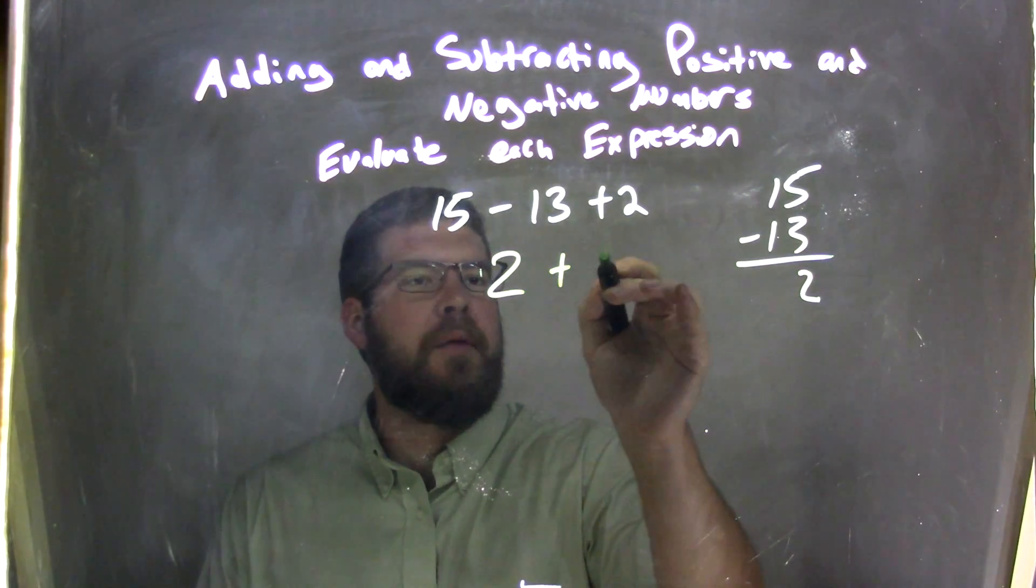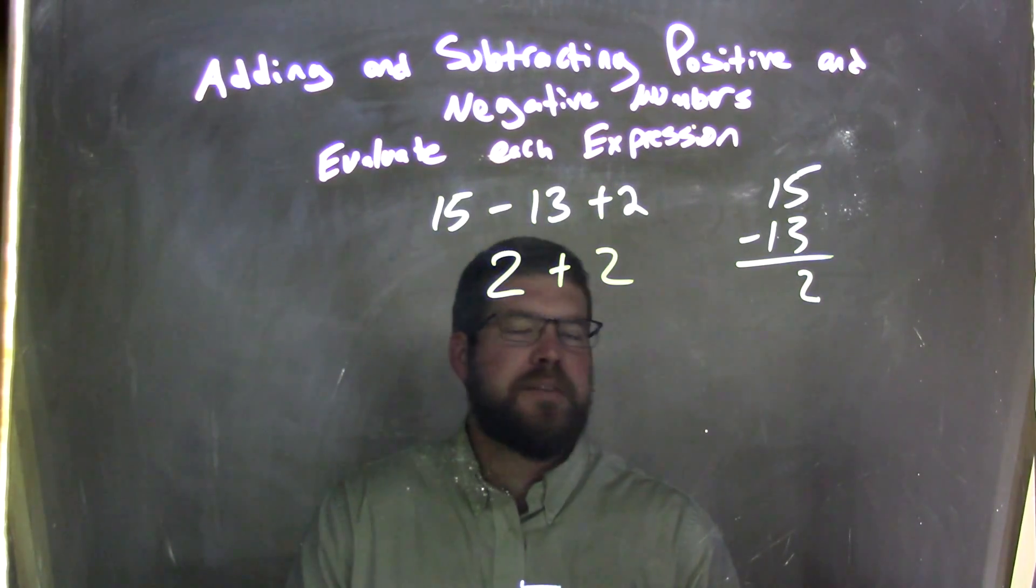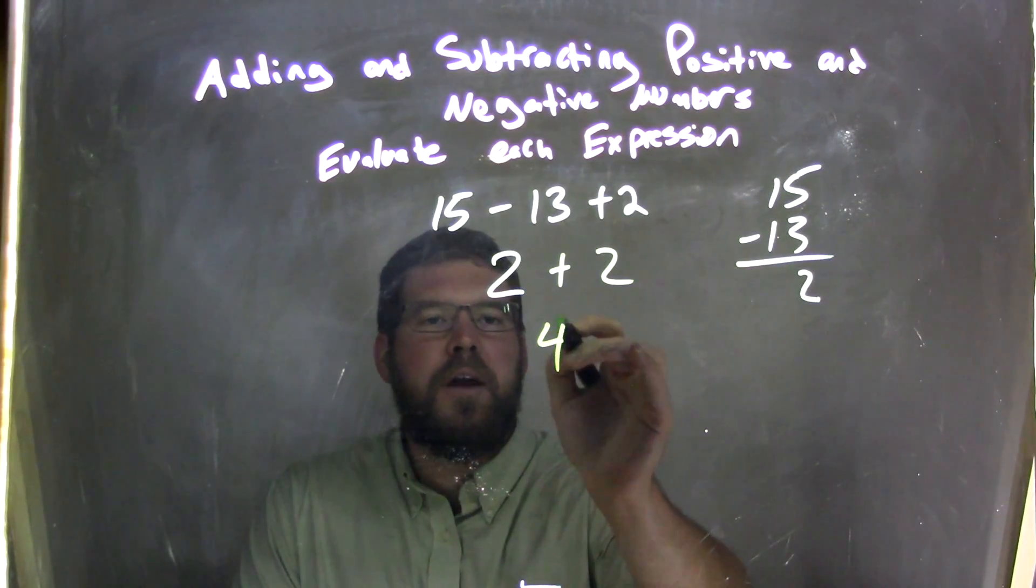So I have positive 2 here, and I'm going to bring down this 2. Sometimes you don't need to convert it to plus or negative if it's something you can solve right away. Well, 2 plus 2 is 4, and there we go, our final answer.